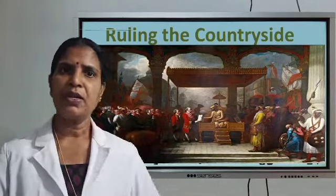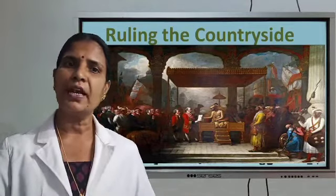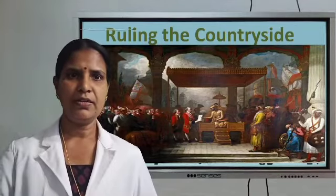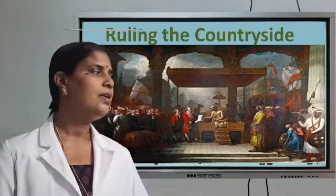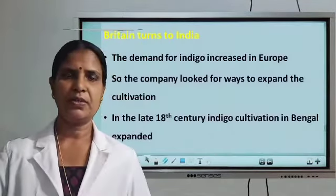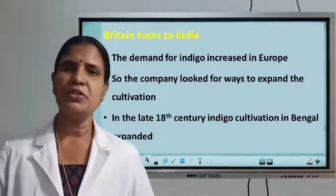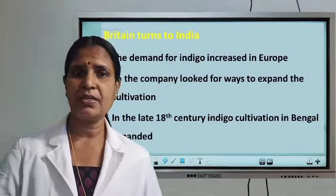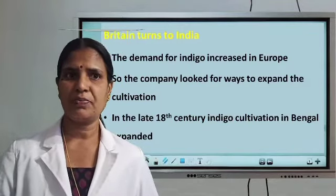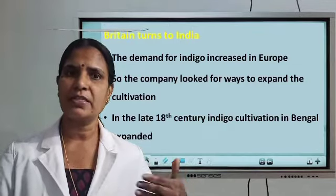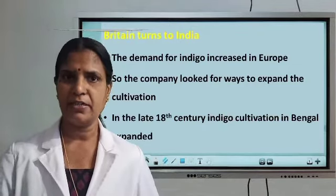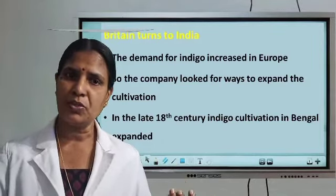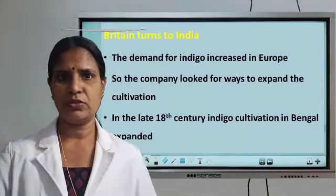They stopped the supply of indigo, so they turned their attention to India. That is what we want to discuss in today's class: Britain turns to India. The demand for indigo increased in Europe. The main reason we discussed last class — due to industrialization, cotton textile production expanded, so there was a high demand for indigo to dye the cloth.